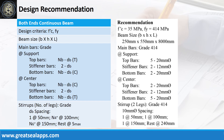Design recommendation as follows. FC' equals 35 MPa, FY equals 414 MPa, beam size is 250 mm by 550 mm by 8,000 mm. Main bars of grade 414: at support — top bars 5 pieces 20 mm bar, stiffener bars 2 pieces 12 mm bar, bottom bars 2 pieces 20 mm bar. At center — top bars 2 pieces 20 mm bar, stiffener bars 2 pieces 12 mm bar, bottom bars 5 pieces 20 mm bar. Stirrup of 2 legs, grade 414, 10 mm bar.